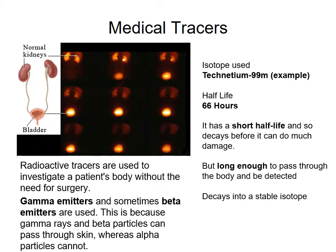An example of a good isotope that's used is technetium-99, because it has a very short half-life, meaning it decays before it can do much damage in the body. You don't want gamma radiation floating around the body for very long. So a 66-hour half-life is sufficient to get a reading, but then it decays back into a stable isotope, which won't affect the rest of the body and cause things like cancer.